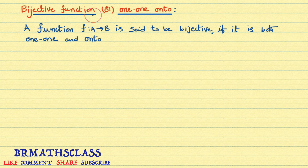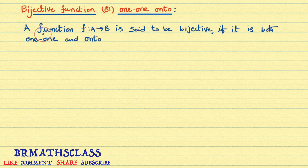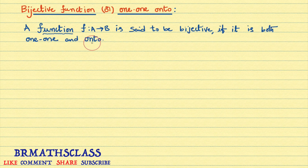Bijective function is also known as 1-1 onto function. A function f from A to B is said to be bijective if it is both 1-1 and onto.